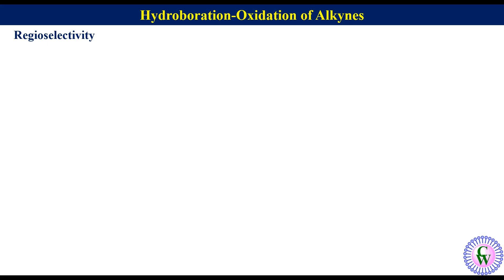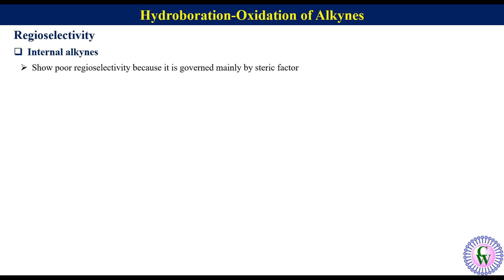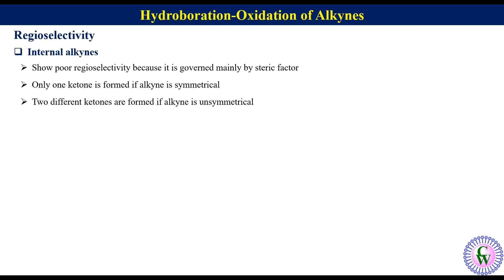Regioselectivity in Hydroboration Oxidation of Alkynes: Internal alkynes show poor regioselectivity because it is mainly governed by a steric factor. So hydroboration oxidation of symmetrical internal alkynes gives only one ketone, while unsymmetrical internal alkynes lead to the formation of two different ketones.